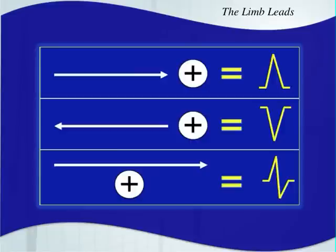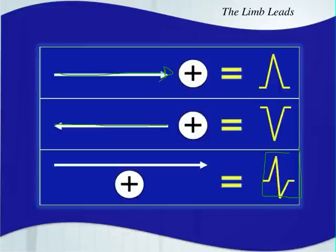So if that electricity is traveling towards the positive electrode of a lead, it's going to cause a positive deflection in that lead. This is very dependent on which lead you're looking at. If that mean electrical activity is traveling away from the positive electrode, it's going to give you a negative deflection. And if it's traveling in a perpendicular direction — basically a 90-degree angle — it would give you an equiphasic deflection, meaning it's just as positive as it is negative. This should give you some intuition as to where all these different lines are coming from on an EKG.